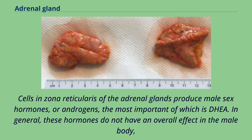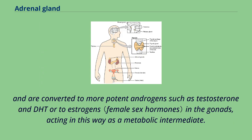Cells in the zona reticularis of the adrenal glands produce male sex hormones, or androgens, the most important of which is DHEA. In general, these hormones do not have an overall effect in the male body and are converted to more potent androgens such as testosterone and DHT, or to estrogens in the gonads, acting in this way as a metabolic intermediate.